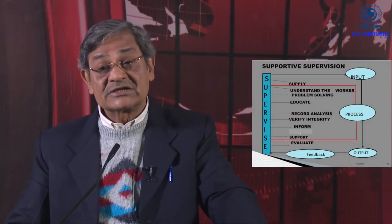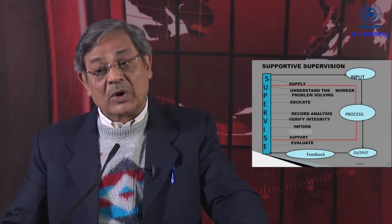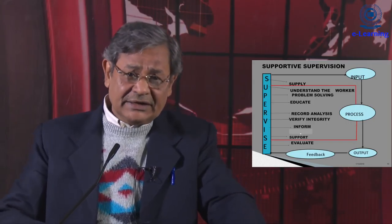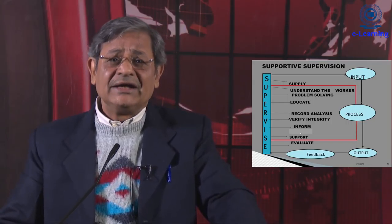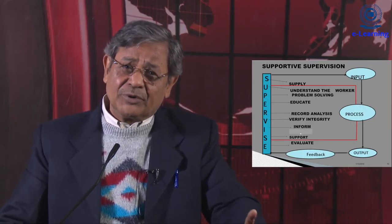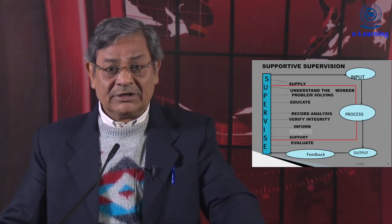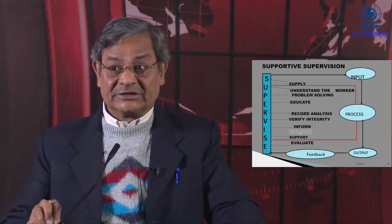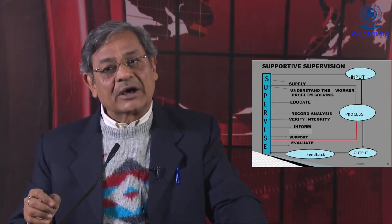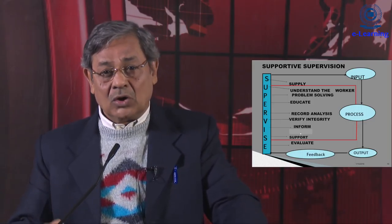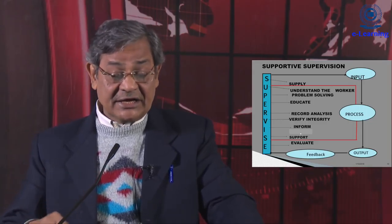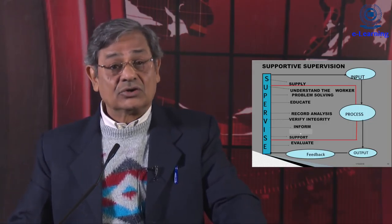The letter U stands for 'understand the worker.' One has to understand whether the worker really did not work or had some problem for which he could not work. There is a difference between 'did not work' and 'could not work.' A supervisor has to see whether the worker was unable to work or did not intentionally work.